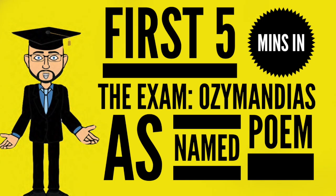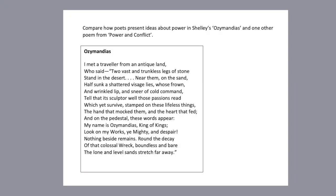Hello everybody and welcome to this new series on what to do in the first five minutes with an English literature anthology poetry question. Let's imagine your named poem is Ozymandias and the question is: compare how poets present ideas about power in Shelley's Ozymandias and one other poem.